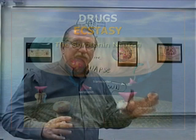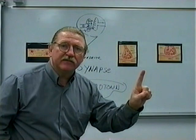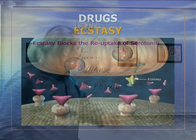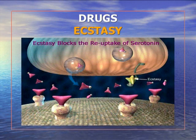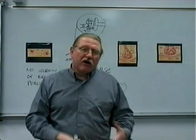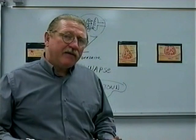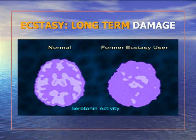First, ecstasy dumps massive amounts of serotonin into the system — and the system has limited amounts of serotonin, of course. Second, it blocks the reuptake of serotonin back into the system, so less is being manufactured for the next day. When you start crashing off of ecstasy — or E as it's often called — extreme depression is very common. It gets you going up fast by dumping lots of serotonin, then you crash because the available serotonin is depleted.